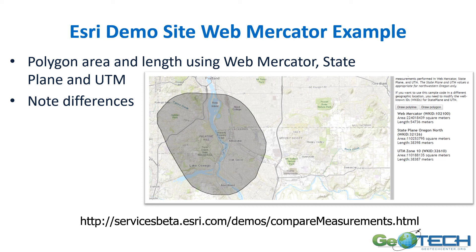ESRI has a demo site that's interesting to show the differences. We can create a polygon in a region and look at the different values — Web Mercator shows an area quite different than State Plane or UTM Zone 10. So if you need accurate results, make sure you have used the correct map projection.